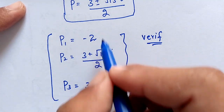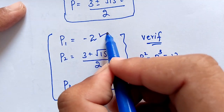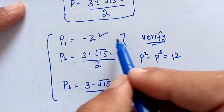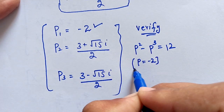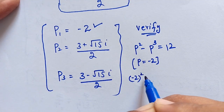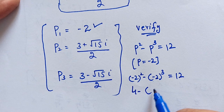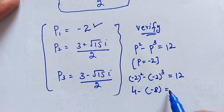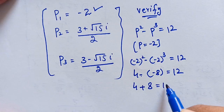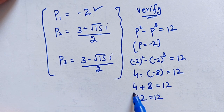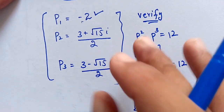Now let us verify whether these answers are correct. The question is p squared minus p to the power of 3 equals 12. We take the real value p equals minus 2. Substituting: minus 2 squared minus minus 2 to the power of 3 equals 4 minus minus 8, which equals 4 plus 8, equals 12. So the left hand side equals the right hand side, confirming that p equals minus 2 is the correct value.